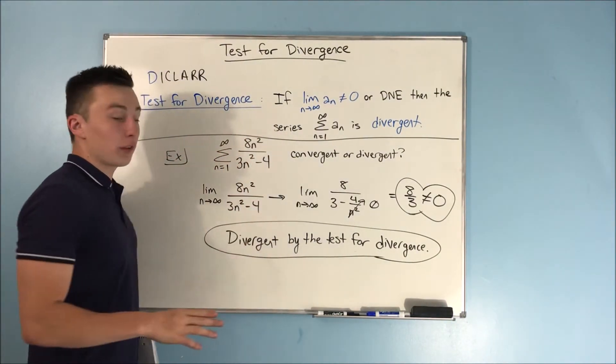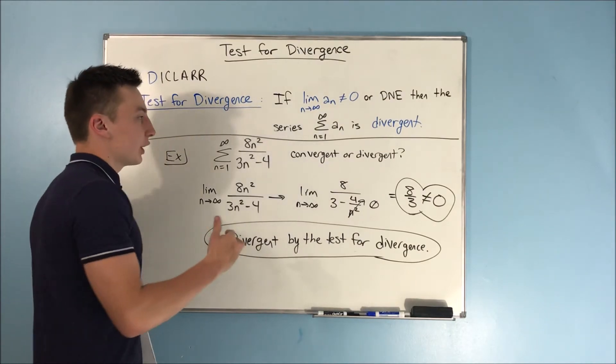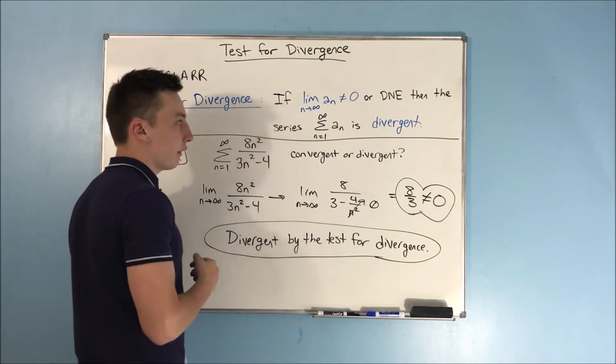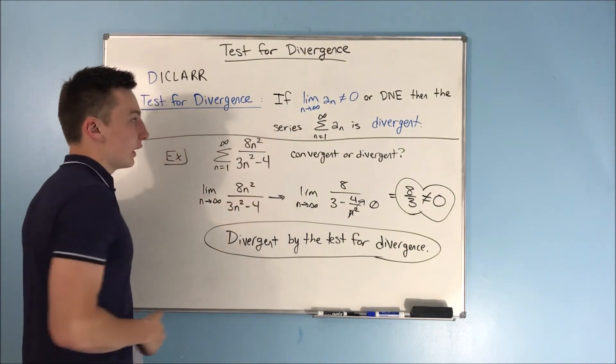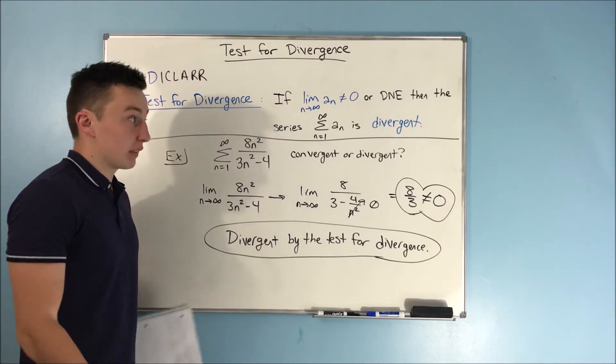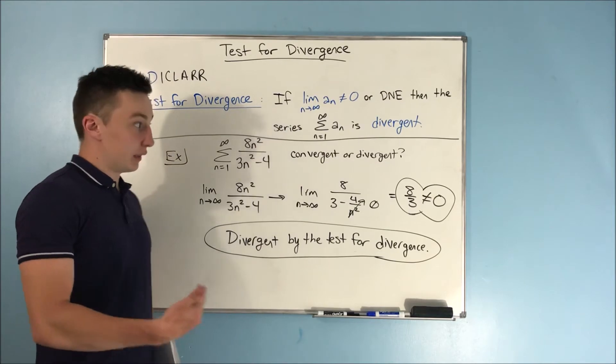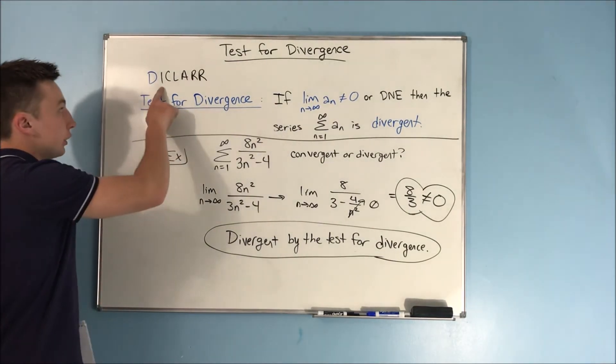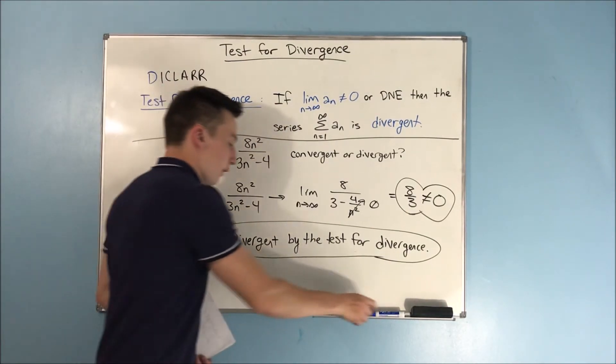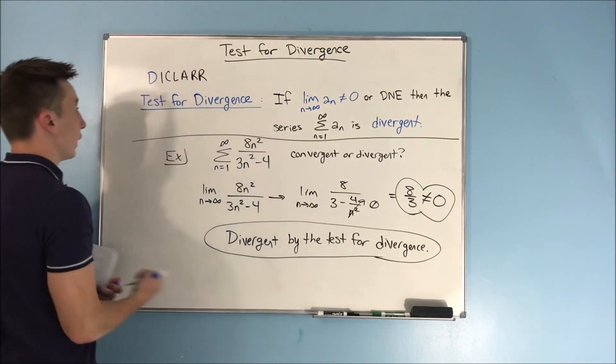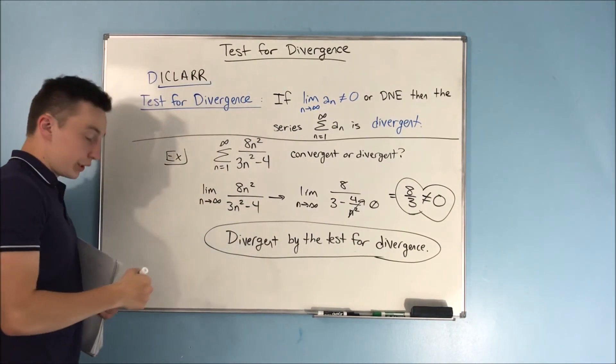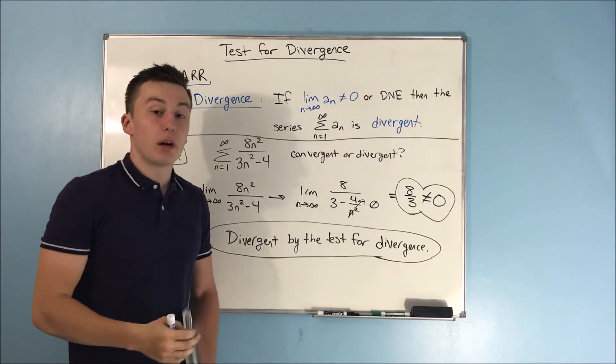Now, I know it seemed like we went over a lot, but really, all this is is just taking a limit as n approaches infinity of your a sub n. If it's not equal to zero, great, it's divergent. If it's equal to zero, well, then you've got to go to your next test. And for us, that would be checking for the next test that we'll go over, which is going to be the integral test. Alright, so that's going to do it for this video.